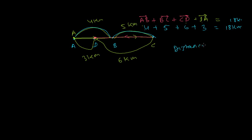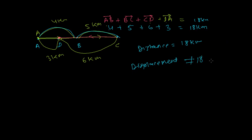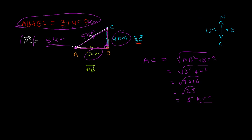Distance is 18 kilometers, but distance is not a vector quantity. If we want to add vectorically, we need displacement. Displacement is the line joining the initial point and the final point. The initial point was A and the final point is also A — we returned to the same place. So displacement equals zero, not 18 kilometers. From this, we can conclude that vectors cannot be added simply algebraically.